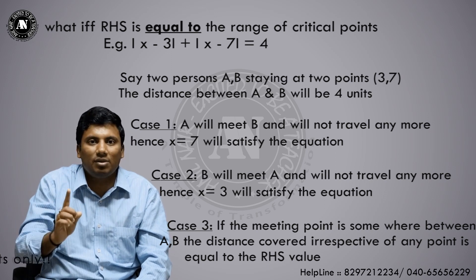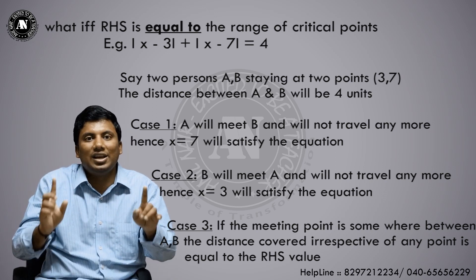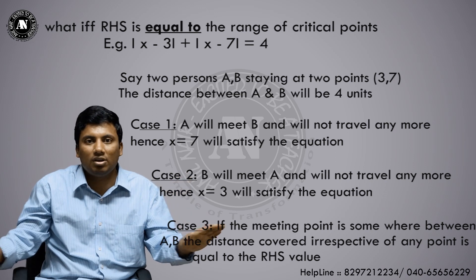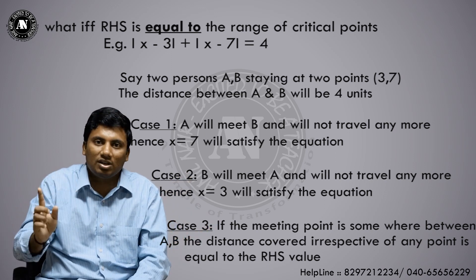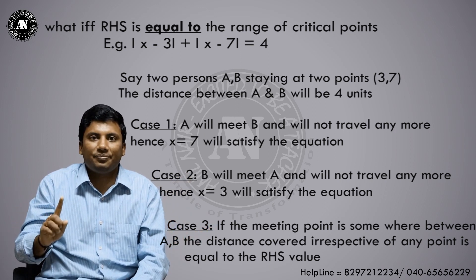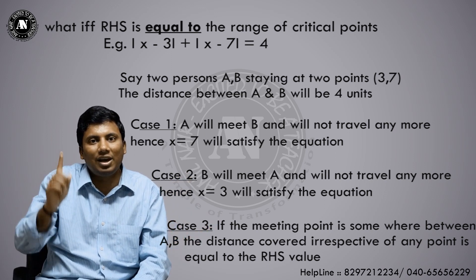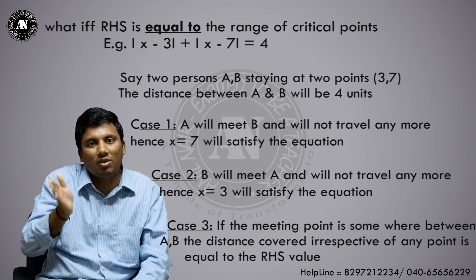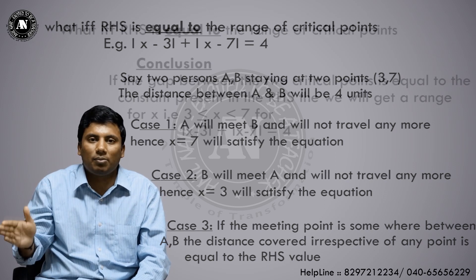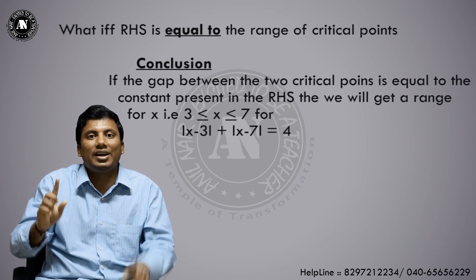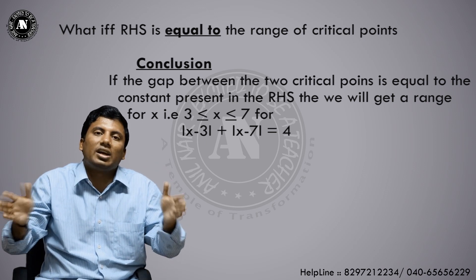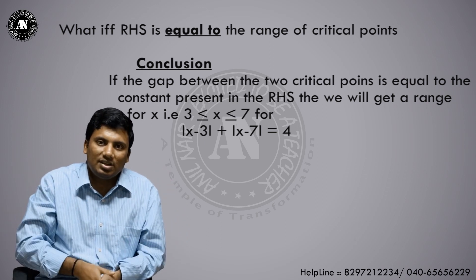Conclusion: if the right-hand side value equals the distance between the two critical points, you will get a range, and that range is between the critical points: 3 ≤ x ≤ 7.